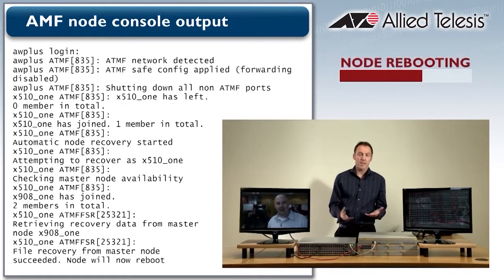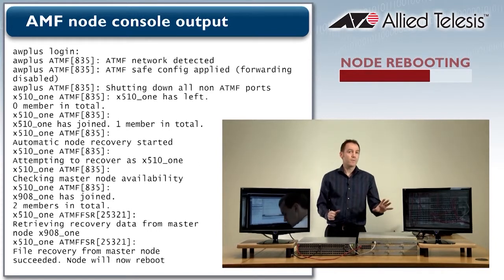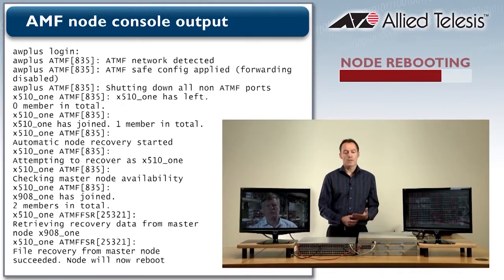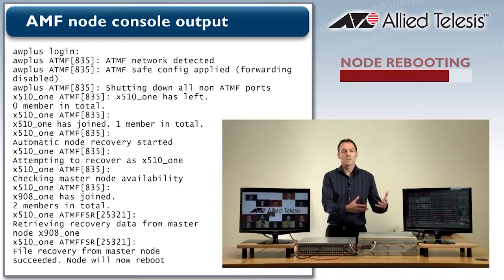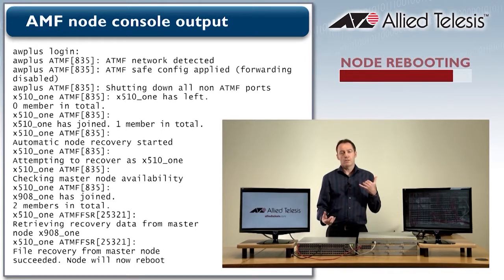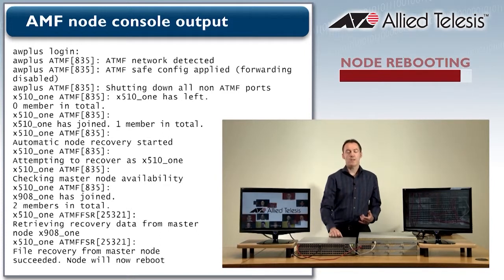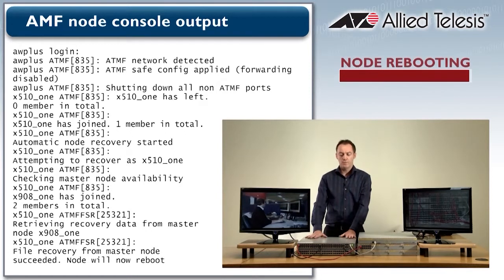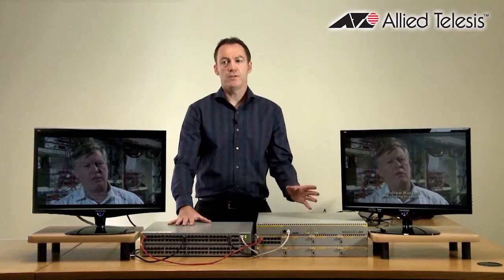This is a really useful feature for scenarios where you have edge units out in remote locations away from the IT center — a school would be an example. You have a switch in a classroom, the switch fails, and the school teacher wants to recover the network. Rather than phoning the IS department or a third-party managed services provider, he simply calls the management center and they say: get the spare unit, cable it up, put the red cable — the AMF cable — in port one, and power it on. AMF will push the configuration down and the video will restart automatically.